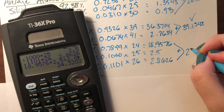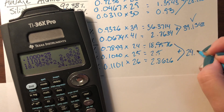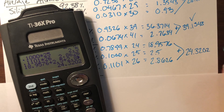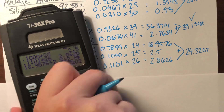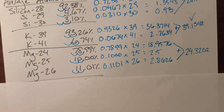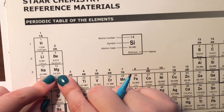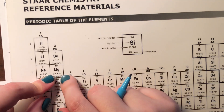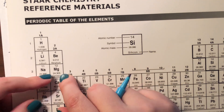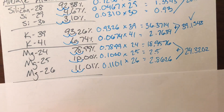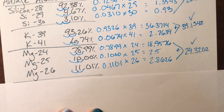The third product is 2.8626. Summing all three gives us 24.3202. Checking against the periodic table, magnesium has a mass of 24.305 — close enough.